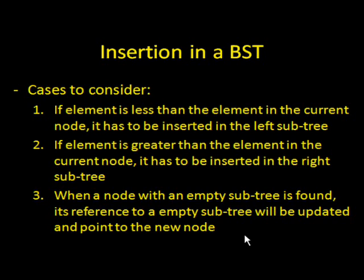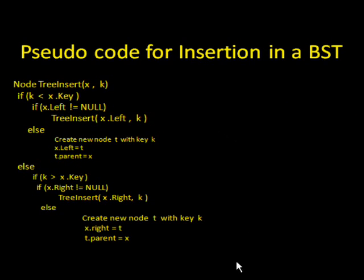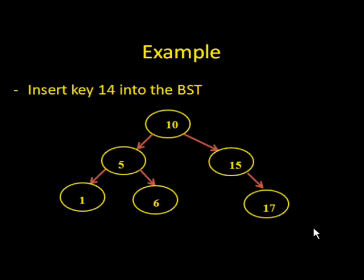Now let's consider how you would insert something into a binary search tree. If the element you're inserting is less than the element in the current node, it goes into the left subtree. If it's greater, it goes into the right subtree. You repeat this until you find a node with an empty subtree, and that's where you insert the node. Here's some pseudocode, and here's an example: suppose we're inserting 14 for the first time. You compare 14 to 10 — 14 is greater, so you go to the right subtree. You compare it to 15 — it's less, so you go to the left of 15. There was nothing stored to the left of 15, so that's where you insert 14.